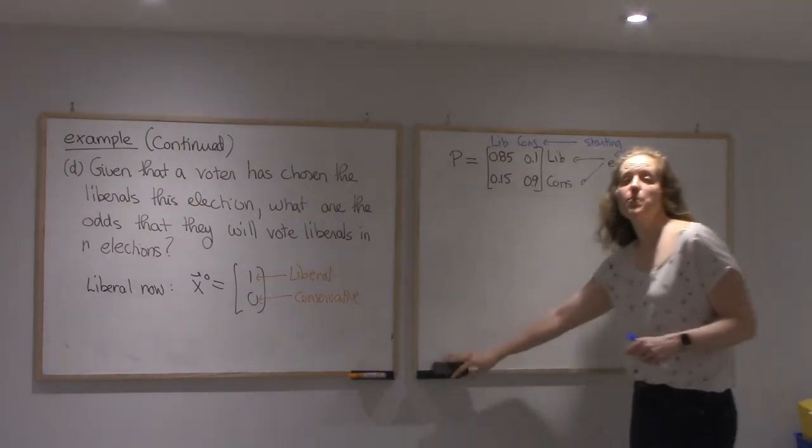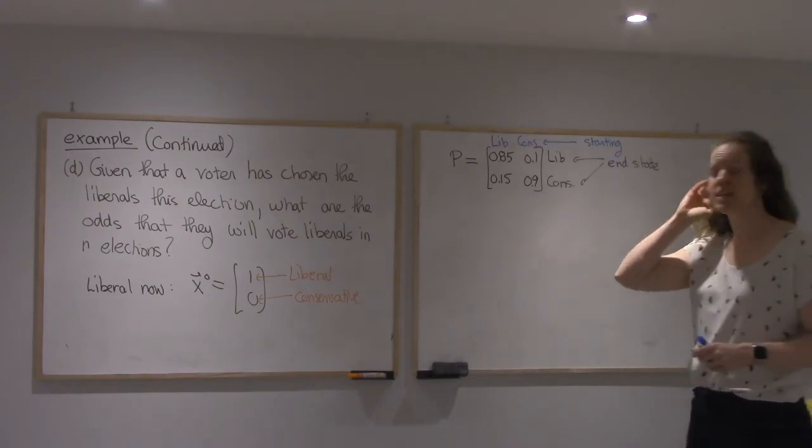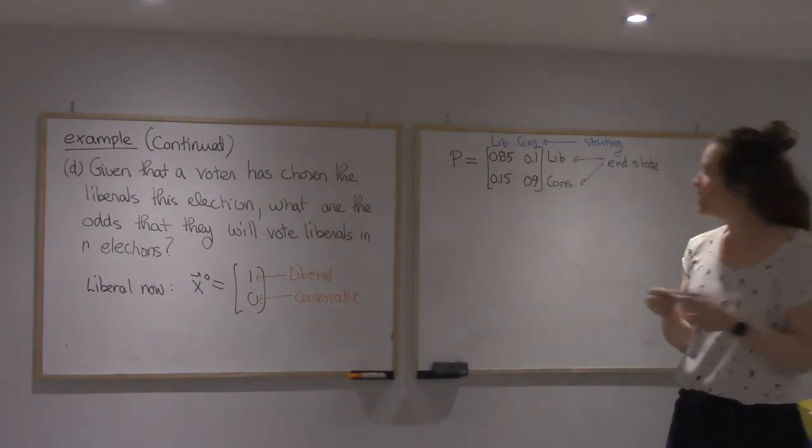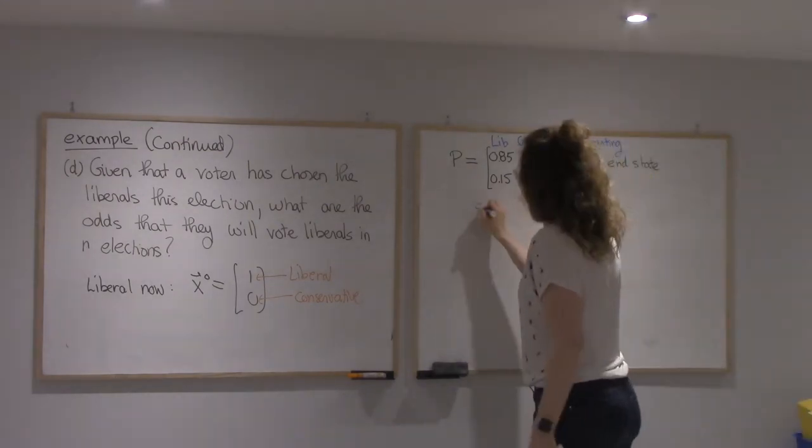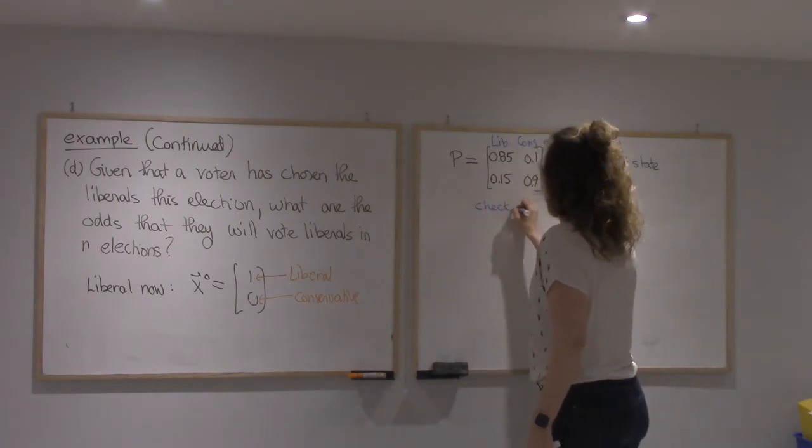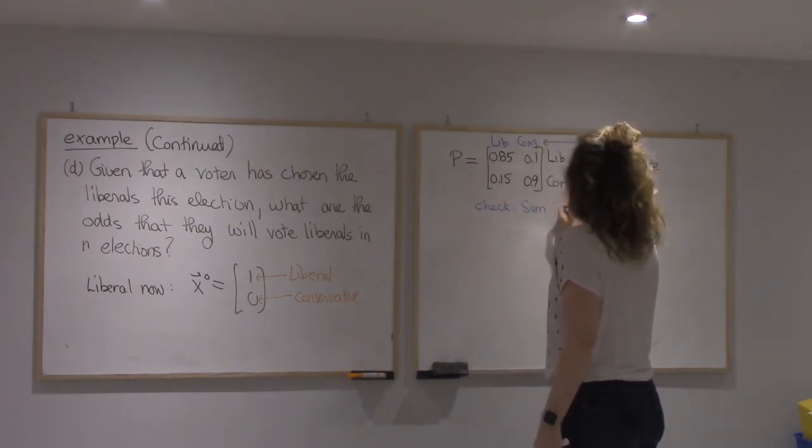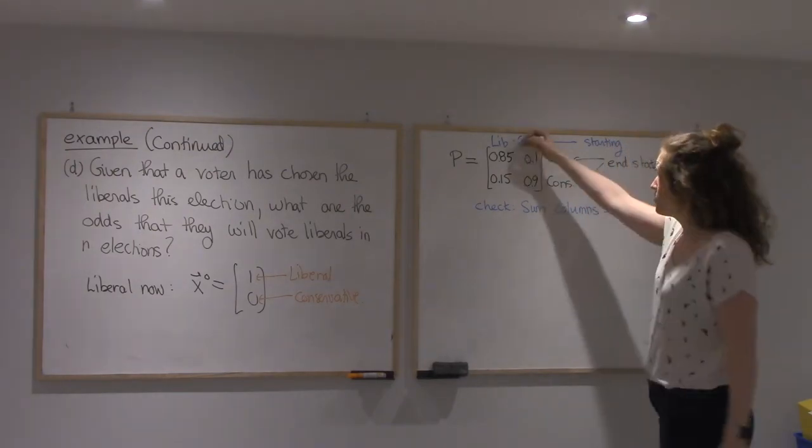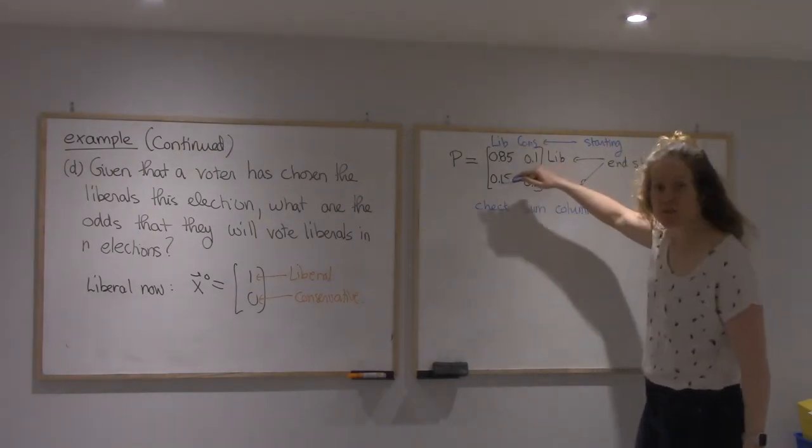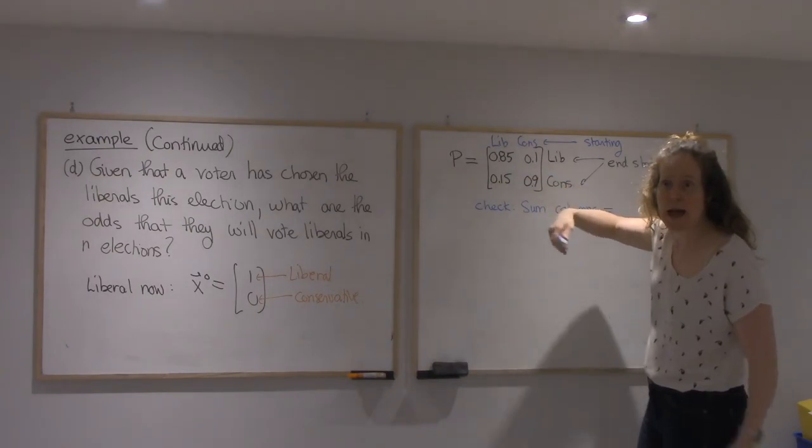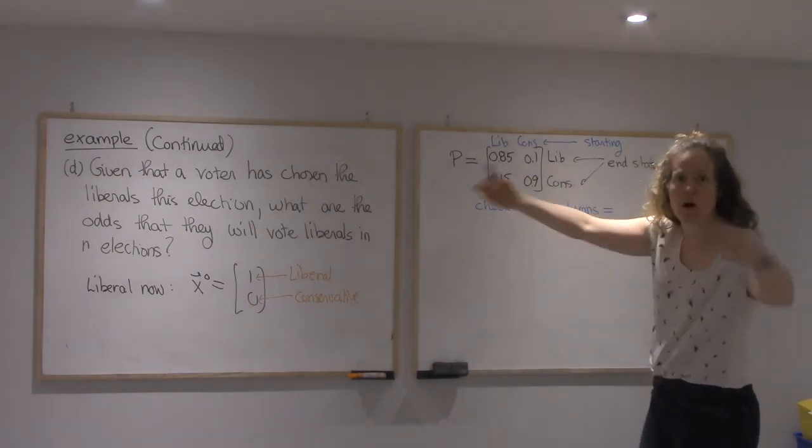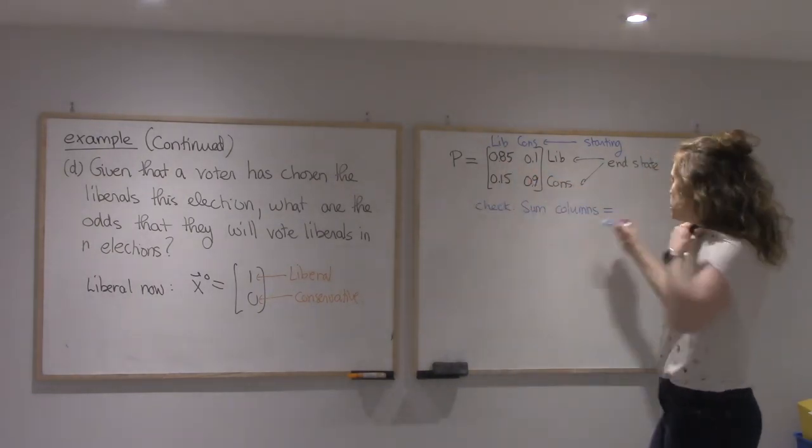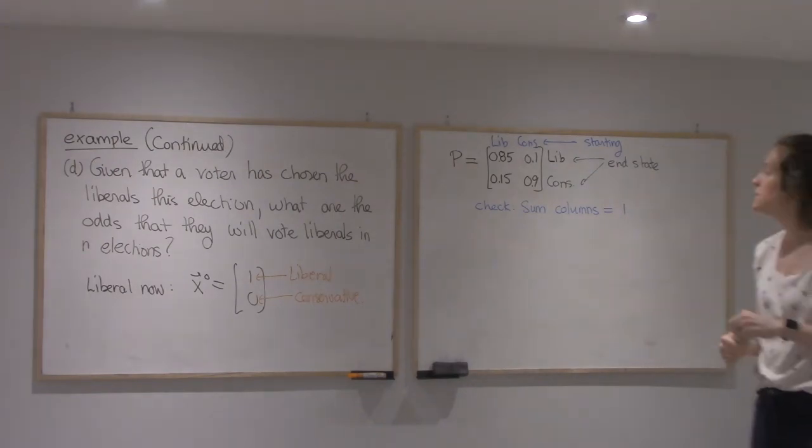All right, so setting this up is where a lot of confusion or mistakes can happen. A quick check is the sum of the columns. That 85 plus 15%, that should be 100% because those are all the possible outcomes if you start Liberal. So they should add up to 100%.